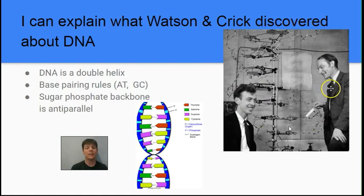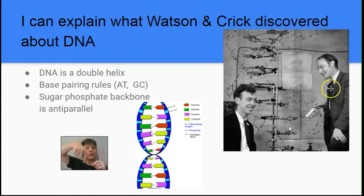They also described the sugar-phosphate backbone running anti-parallel, and this is information that they got from the data from Rosalind Franklin. This means that on one side of the DNA molecule the strand is running pointing up, and on the other strand it points down. So this is the meaning of anti-parallel — it's parallel, but they point in opposite directions.